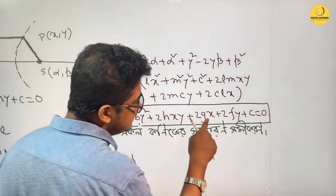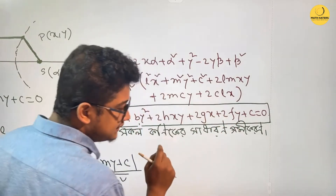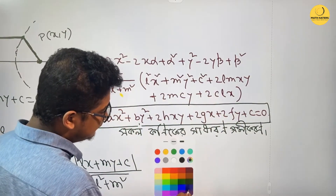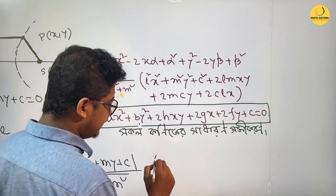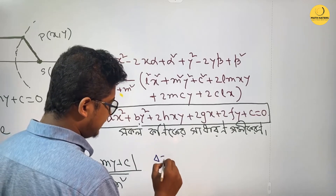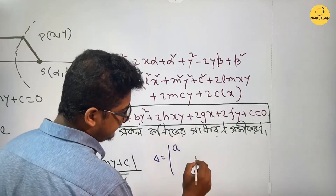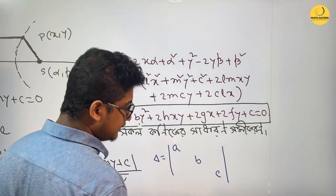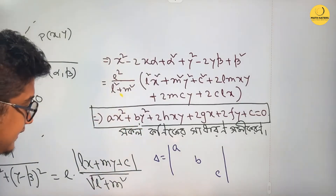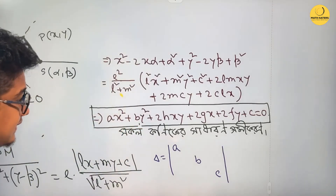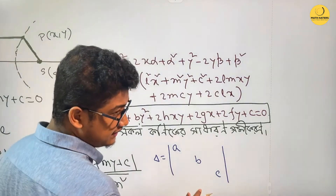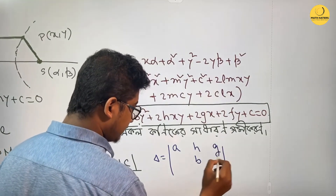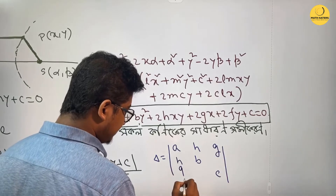The coefficients are: A, B, H, G, C, F. So the terms are: A, B, C, F — and also A, B, C, H, G. These are the standard coefficients of the general second-degree conic equation.